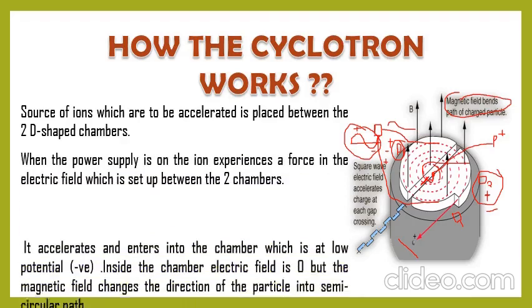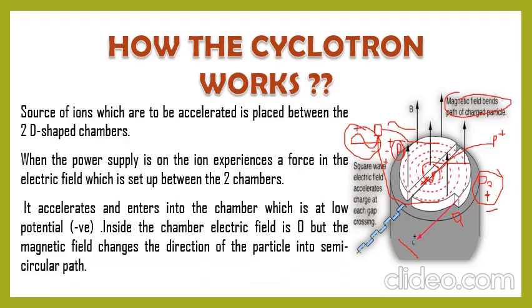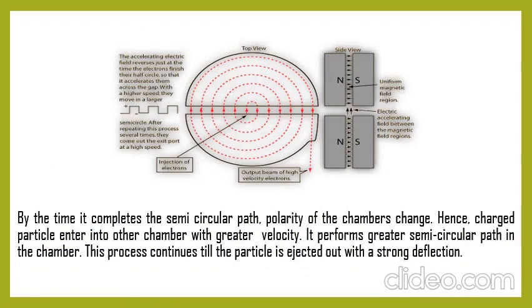This is the top view of the cyclotron. You can see the spiral path — the particle gains energy at the gaps between the D's (shown by the arrows) but does not gain energy inside the D's. When the particle has gained sufficiently high energy, it is ejected out. There is also a side view. Always keep in mind: the particle always gains energy between the D's, and inside the D's it just revolves on a circular path.